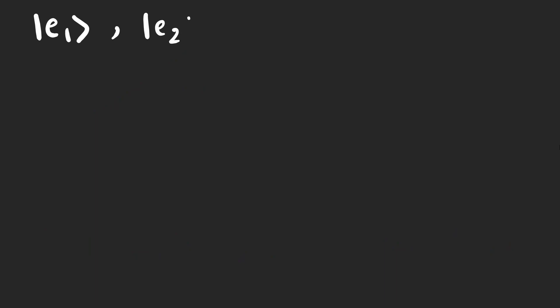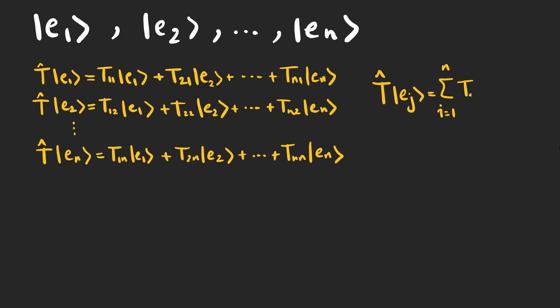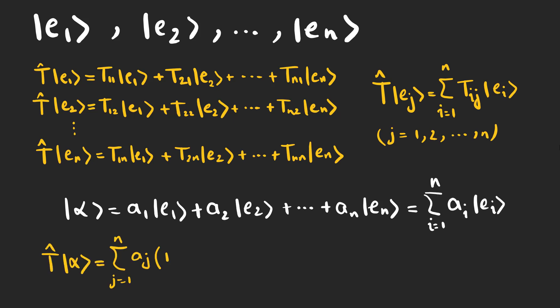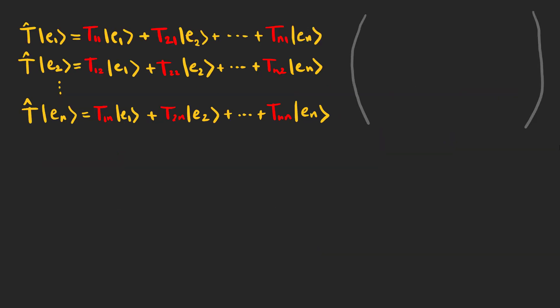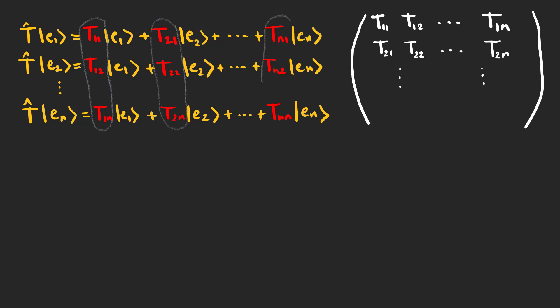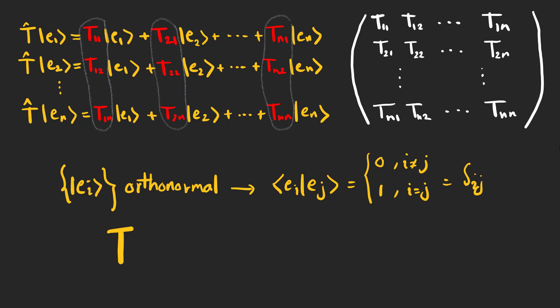If we have a set of basis vectors and know what a linear transformation does to them, we can find out what this linear transformation does to any vector. We can construct a matrix using elements of the linear transformation — these are n-squared elements that characterize it. If the basis is orthonormal, meaning the inner product of e_i and e_j equals delta_ij, we can write these elements as this expression.